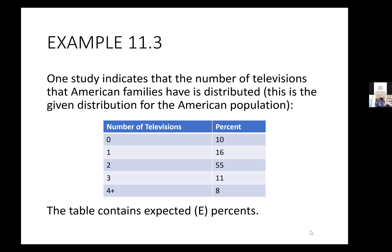I am recording this to post it later. So again, to check to see if the observed data that you have fits what you would have expected it to be. Because you can calculate the theoretical probability, but does the data that you get fit that expected value? So that's the first way that we use the chi-squared, and that's what we're going to look at in this example.